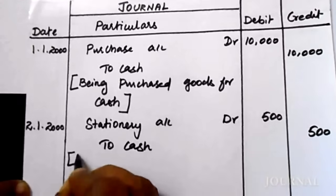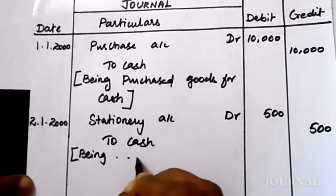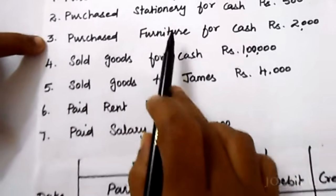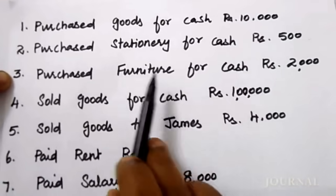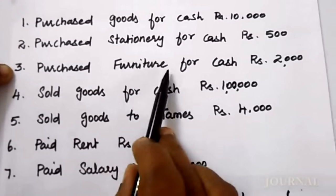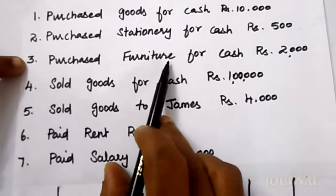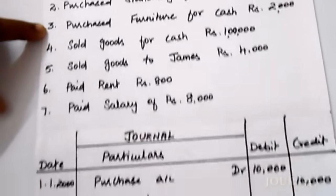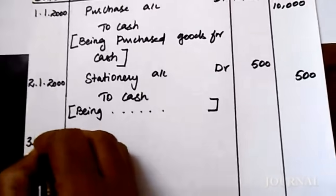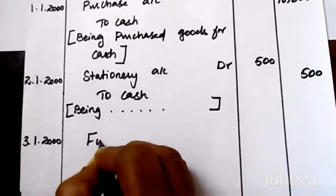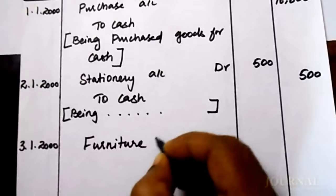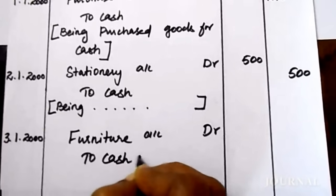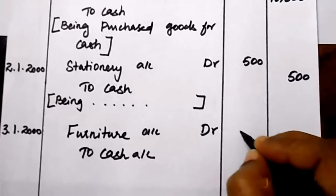Third entry: purchase furniture for cash. On 3rd January 2000, they have purchased furniture. When you purchase furniture, furniture comes in and cash goes out. Furniture account debit to cash account — 2,000 rupees.